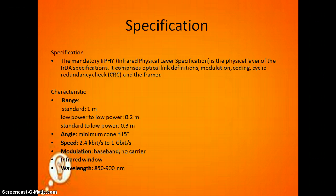The characteristic range for standard is 1 meter, low power to low power is 0.2 meters, and standard to low power is 0.3 meters. The minimum cone angle is plus or minus 50 degrees. Speed ranges from 2.4 kbps to 1 Gbps. Modulation uses baseband, no carrier, infrared window, and the wavelength range is 850 to 900 nanometers.